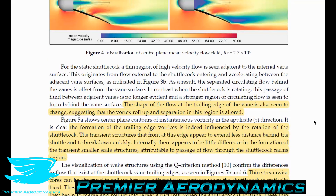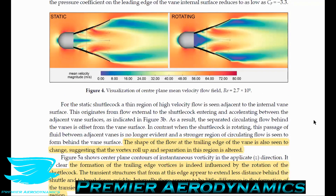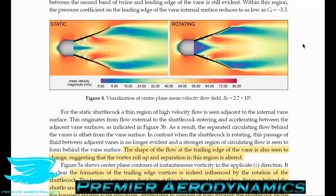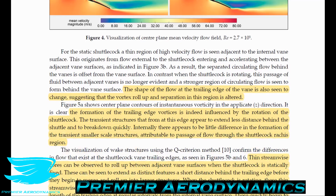The shape of flow at the trailing edge of the vein also changes, suggesting vortex roll-up and separation in this region is altered. When rotating, there is a big difference in velocity past the feathers — lower velocity compared to the static condition. Interestingly, even though rotation increases these pressure effects, the overall drag still reduces by 4%, indicating something else is occurring that the figures alone don't fully explain.